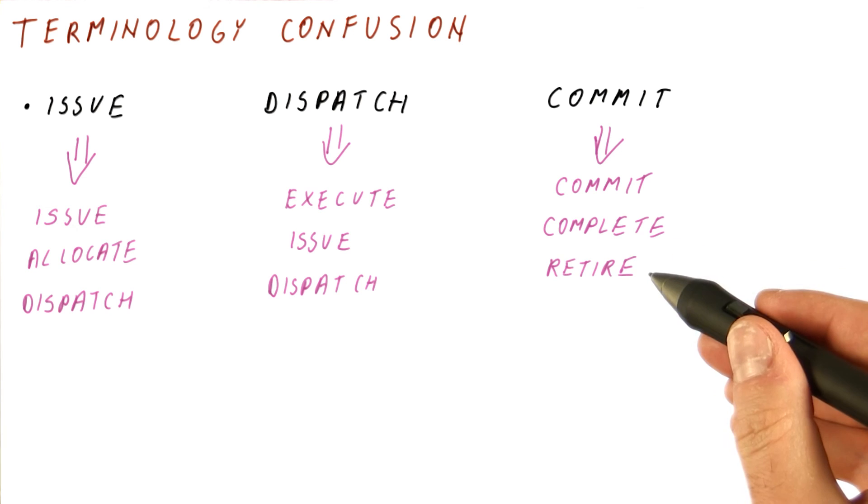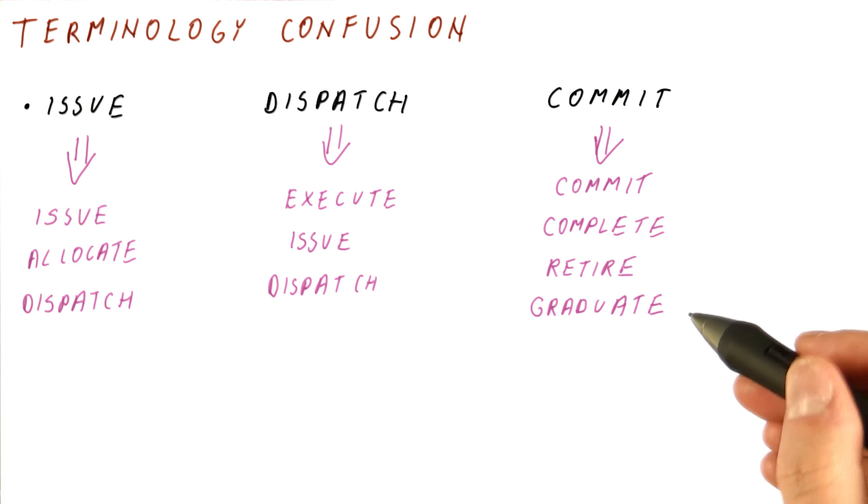And then commit is also often called retire. So we retire the instruction from the processor. And because a lot of papers have been written by academics, especially graduate students, commit has also been called graduate. You can guess why.